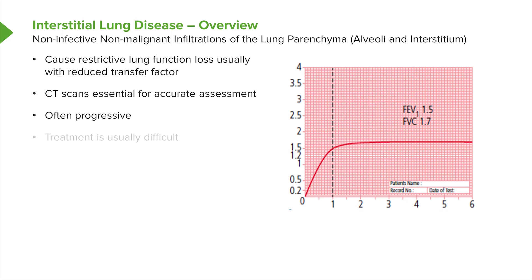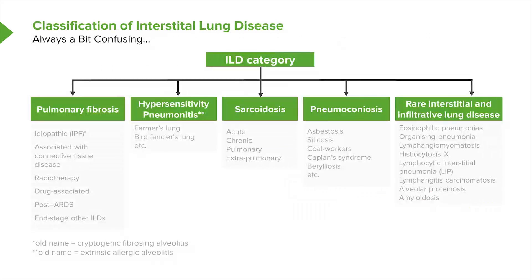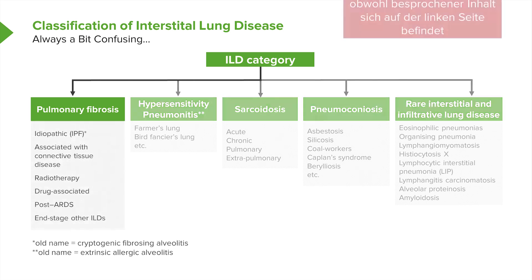Pulmonary fibrosis is often a progressive disease and is actually very difficult to treat. Categorizing ILDs is not straightforward. This is one useful way of categorizing ILDs and thinking about them in general — here we have five categories, and on the right-hand side you have pulmonary fibrosis.